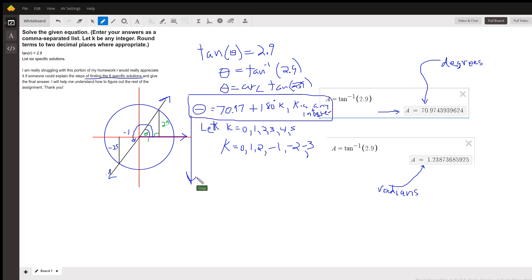And if you wanted to do it in radians, you'd say theta equals 1.24, rounded to two decimal places, plus k pi, where k is any integer.